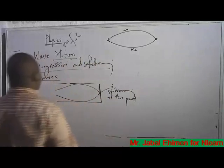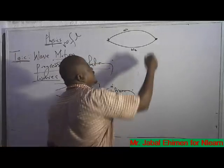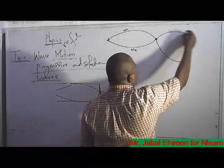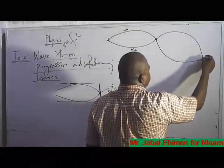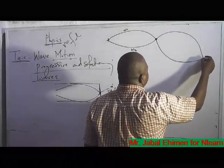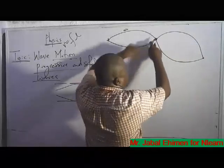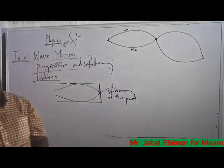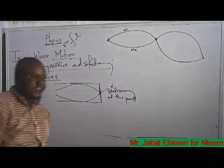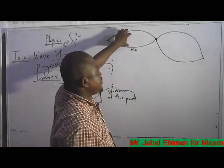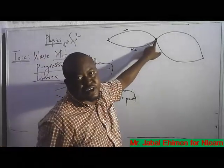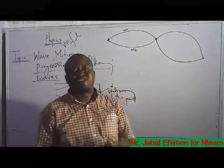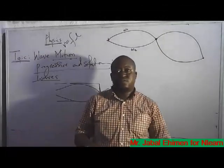So it is called a stationary wave. A wave can be progressive while traveling, but when two waves meet and combine, they become stationary at that point. At that point, their resultant movement tends to zero. From there, we can draw out a nodal and antinodal graph.